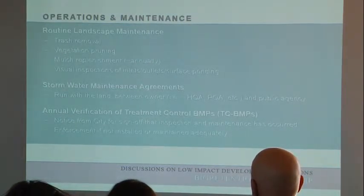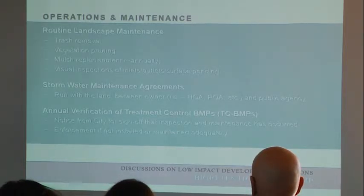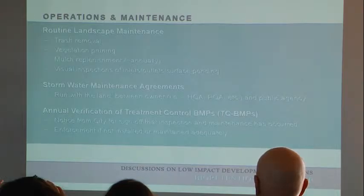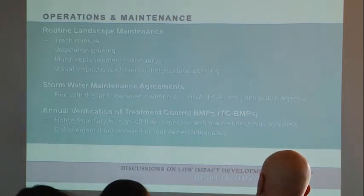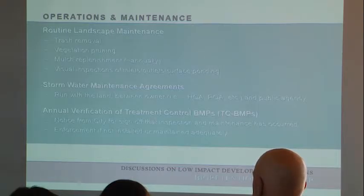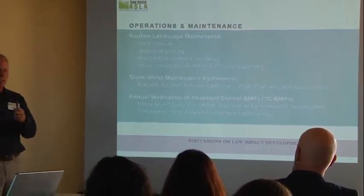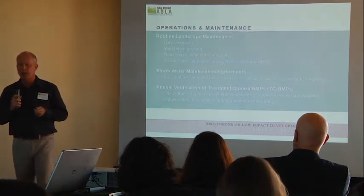I want to talk a little bit about maintenance. Typical things include trash removal. One thing we recommend — it's always recommended — is about two inches of mulch, not compost, added to the bioretention every year. The reason is the compost in the soil is decomposing, and we need to bring more organic material back in. Mulch is required. Also, foot traffic often compacts these areas, and mulch helps by providing that cushion so you don't get that compaction continuously.